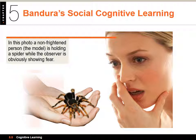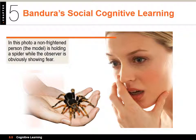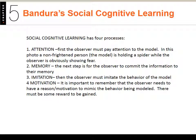Bandura's social cognitive learning involves four processes. In this photo, a non-frightened person — the model — is holding a spider while the observer is obviously showing fear. Number one: Attention — the observer must pay attention to the model. Number two: Memory — the observer commits the information to memory. Number three: Imitation — the observer must imitate the behavior of the model. Number four: Motivation — the observer needs a reason or motivation to mimic the behavior being modeled. There must be some reward to be gained.